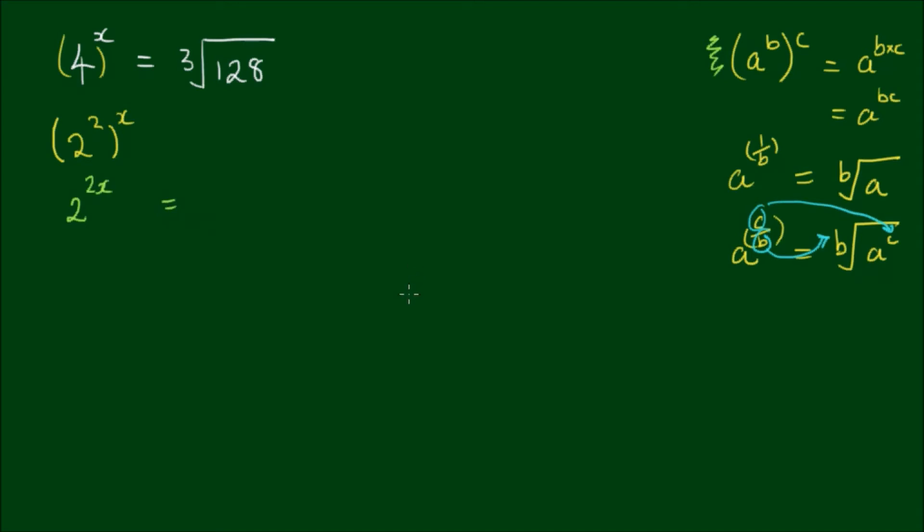Now what about the right-hand side? Well, according to this law, the right-hand side is 128 to the power of... the 3 goes on the bottom. And the 1 comes to the top. So it's 128 to the power of 1 third. So now the question is 128 at its lowest base. What can we express this as?